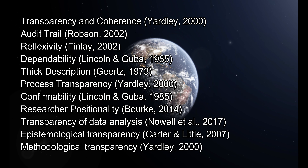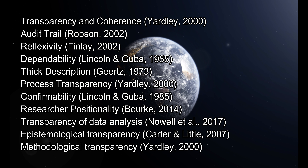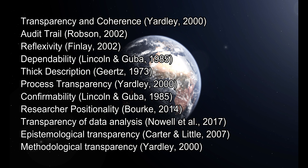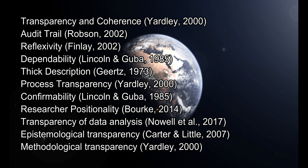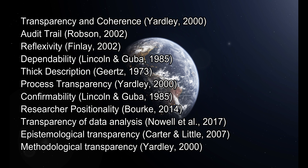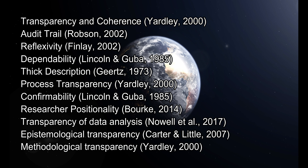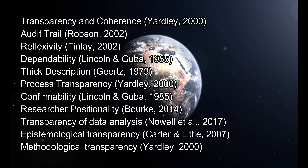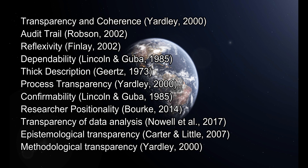Here, for example, you can look at some example concepts that are relevant to this topic and that you can consider using in your writing. These include: transparency and coherence by Yardley; audit trail, something I often refer to from Robson; reflexivity, which is about being transparent about your role and the whole process; dependability; member checking; thick description; process transparency; confirmability, which relates to the role of the researcher and bias; researcher positionality; transparency of data analysis; epistemological transparency; and methodological transparency.